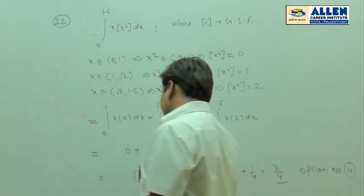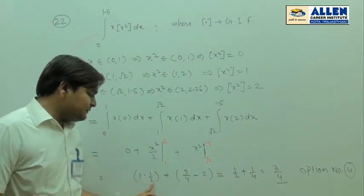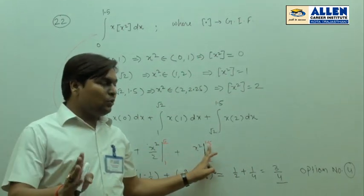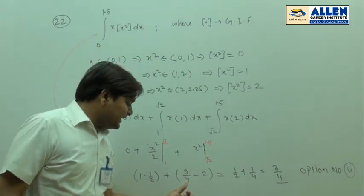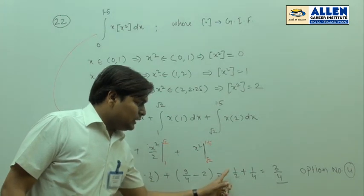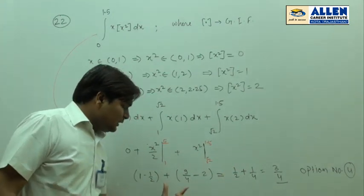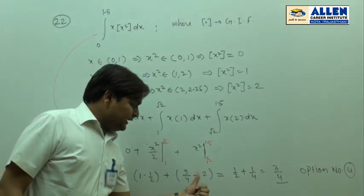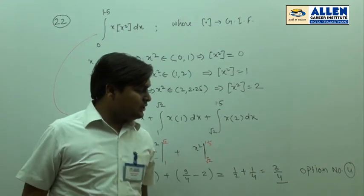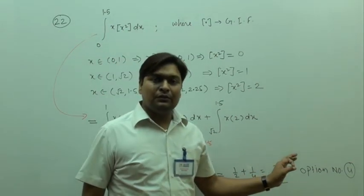Putting in the upper and lower limits: from the second part we get (1 − 1/2) = 1/2. From the third part we get (9/4 − 2) = 1/4. Adding: 1/2 + 1/4 = 3/4. The answer is 3/4, which is option number 4.